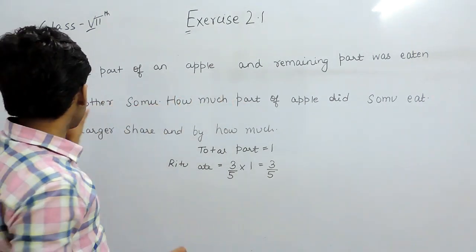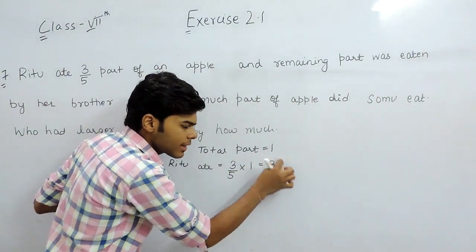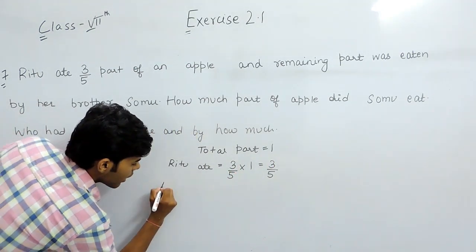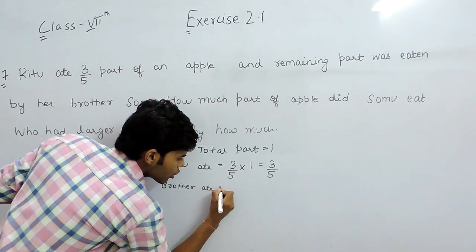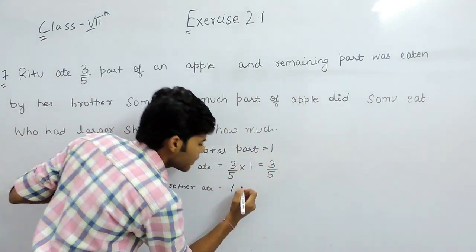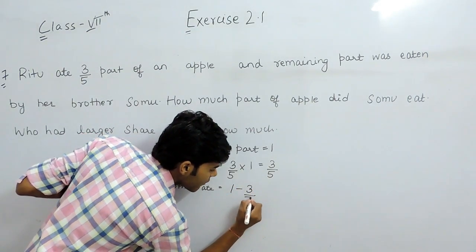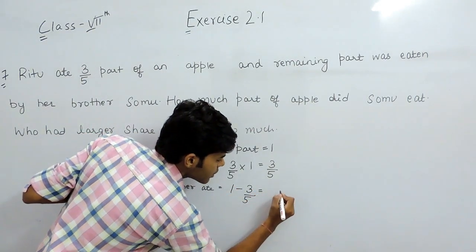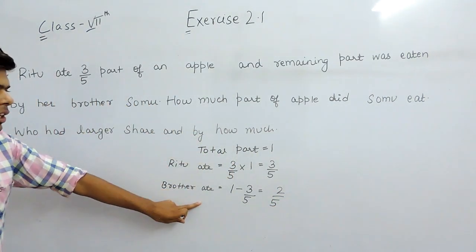And the remaining was eaten by her brother. The total is 1. She ate 3 by 5. So her brother ate total means 1 minus the part she had, means 3 by 5. That will be equal to 2 by 5. So her brother ate 2 by 5.